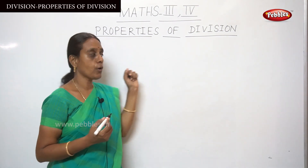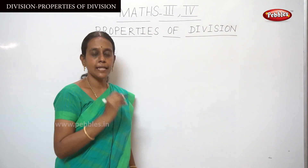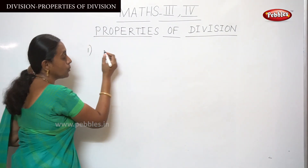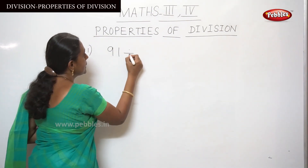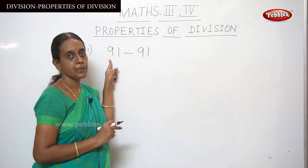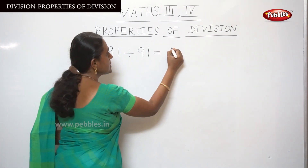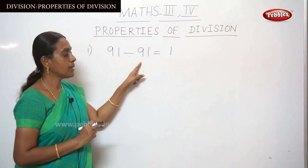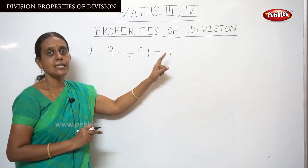The first property is: if the dividend is divided by the same number — for example, 91 divided by 91 — this number is the dividend and the divisor is also the same number. The answer, that is the quotient, will be one, and the remainder will be zero.